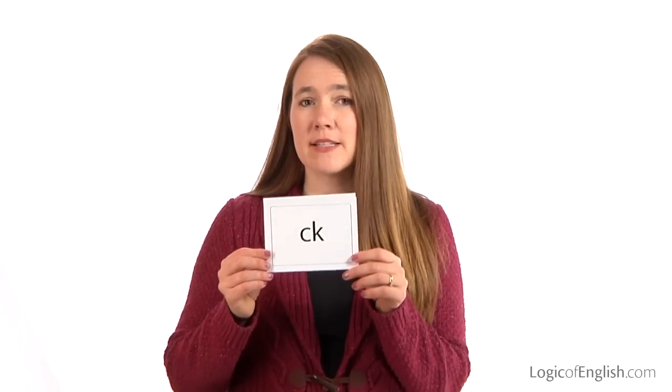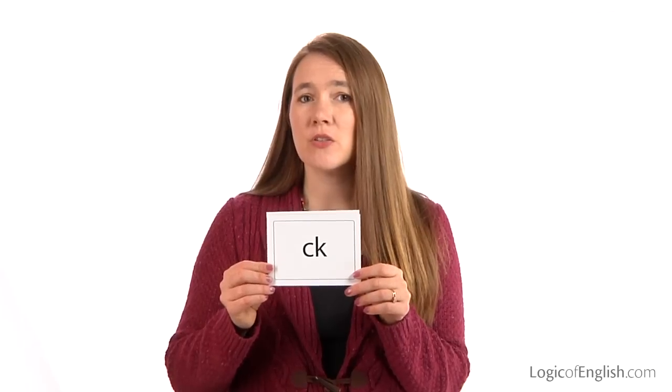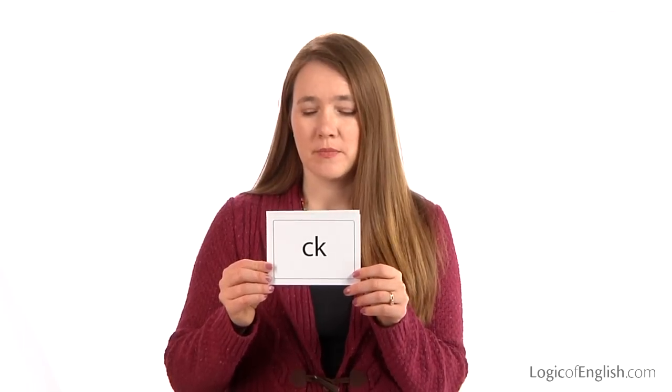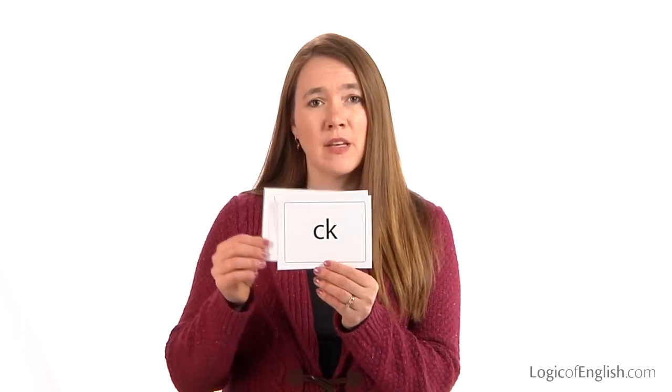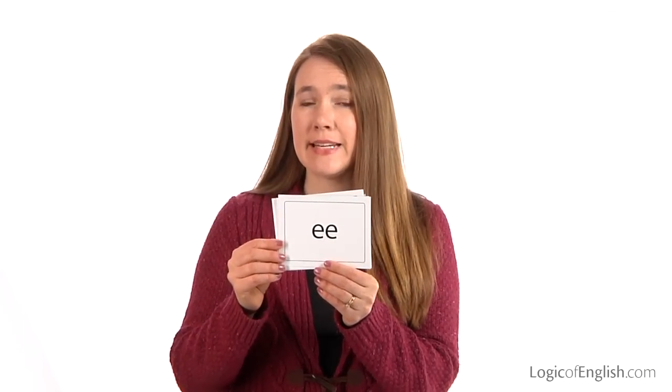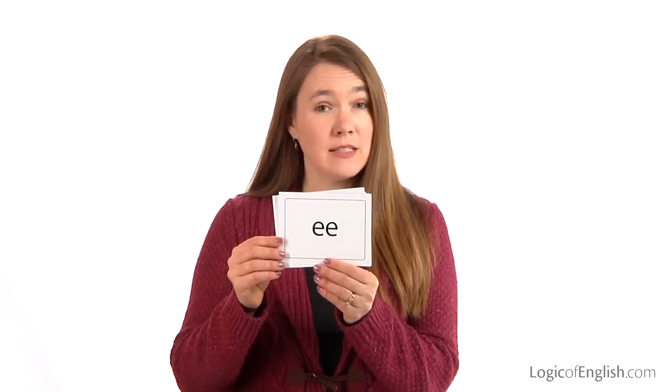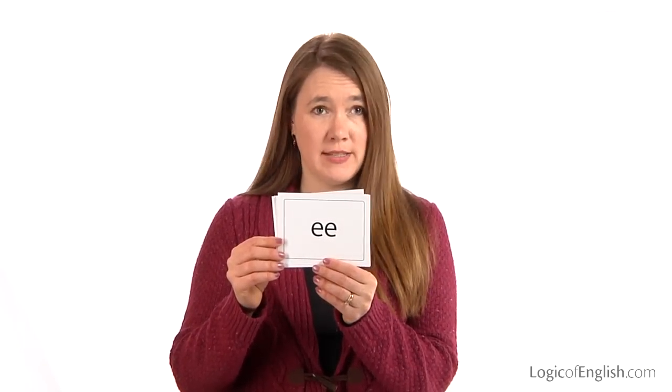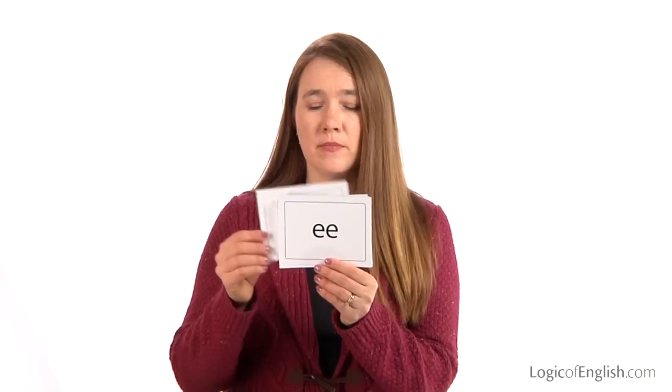For spelling list two, we're going to need four new phonograms, so let's learn those together. The first one is k, two-letter k. The second one is ee, e-double-e, always says e.